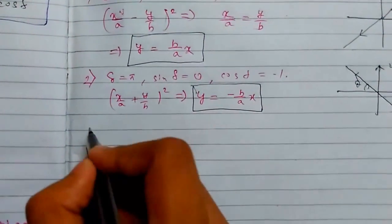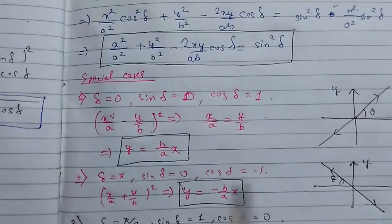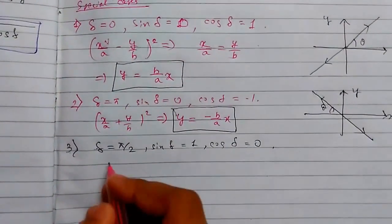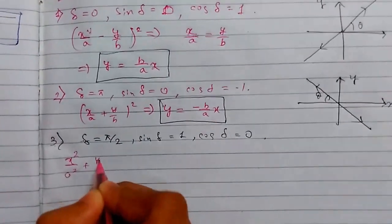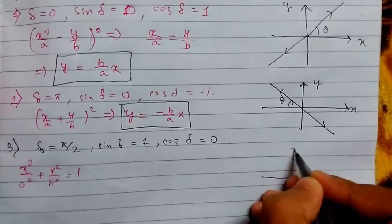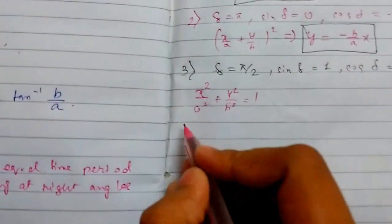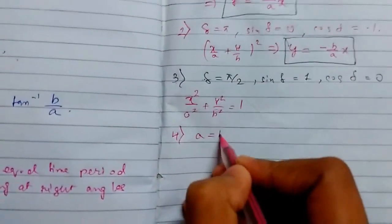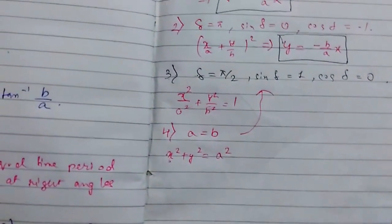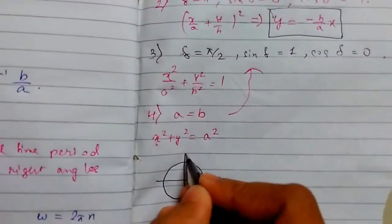Special case three: when δ equals π/2, sin(δ) = 1 and cos(δ) = 0. The equation becomes x²/a² + y²/b² = 1, which is the equation of an ellipse. A special sub-case: when a equals b, the equation becomes x² + y² = a², which is a circle of radius a.